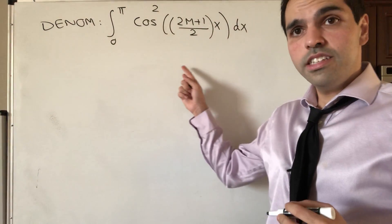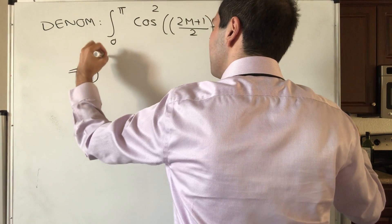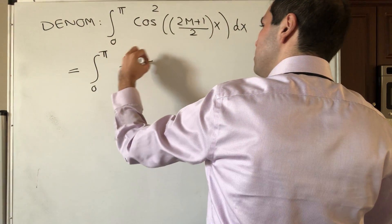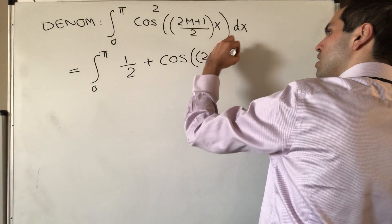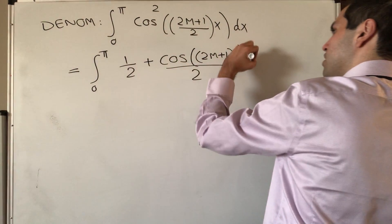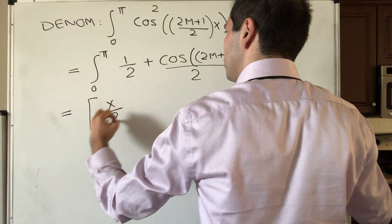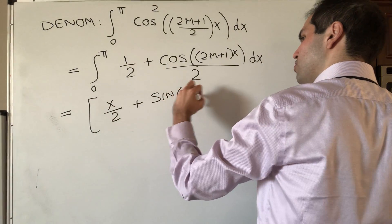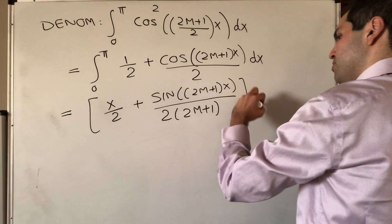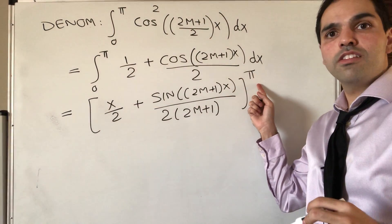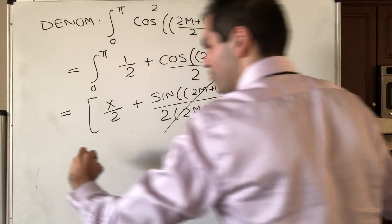For the denominator, we have the integral from 0 to π of cosine squared of (2m+1)/2 · x. We use the half-angle formula, so this becomes 1/2 plus cosine of (2m+1)x, dx. This integrates to x/2 plus sine of (2m+1)x/(2(2m+1)), evaluated from 0 to π. Since sine of odd multiples of π is 0 and sine of 0 is 0, those terms vanish and you're left with π/2.